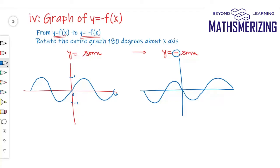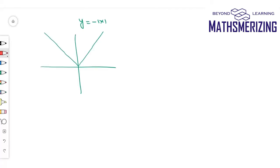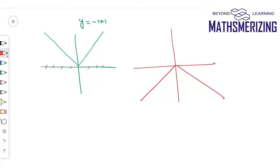Another way: place a two-way mirror on the x-axis and take the reflection of the graph about that mirror. That gives the graph of y equals −sin x. Similarly, to draw y equals −mod x, take the mod x function, place a two-way mirror on the x-axis, take the reflection, and you get the graph of y equals −mod x.